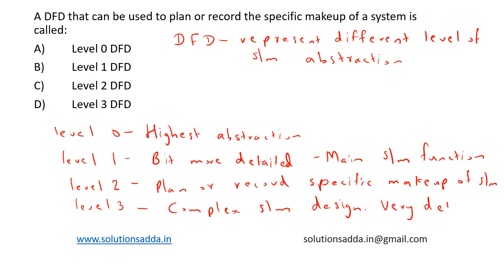So from the question we are asked to find the DFD that can be used to plan or record the specific makeup of a system. Option C, Level 2 DFD, is the correct answer. Option C is the right choice.